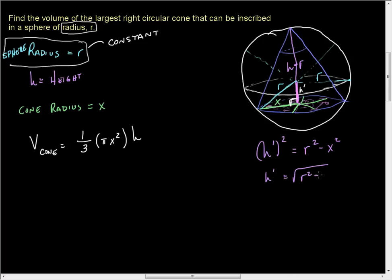And now if we include the fact that h has to have an additional length of r, which is the radius of the sphere up to the vertex of the cone, then we have h is equal to r plus h prime, which is really just r plus the square root of r² minus x².